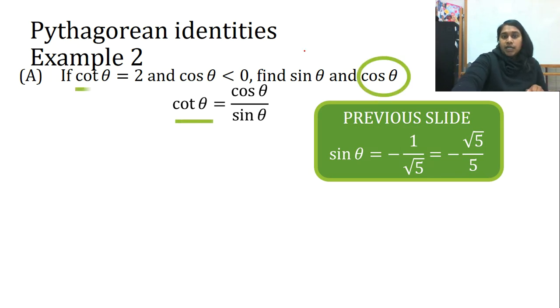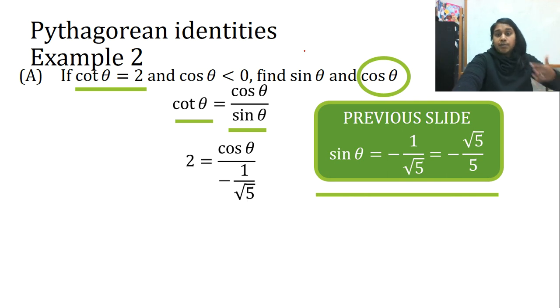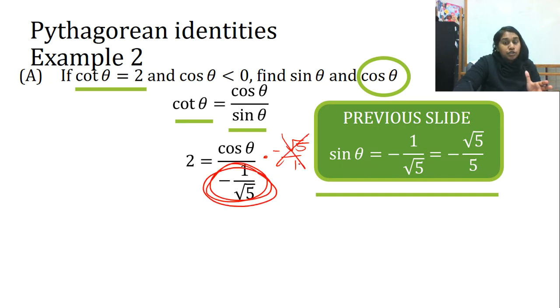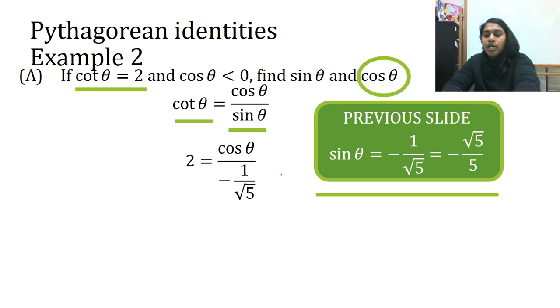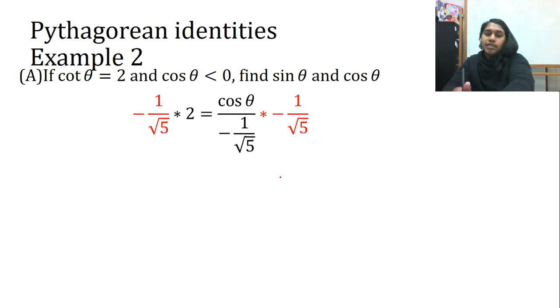I know cotangent and I know sine. So, I can plug those in. So, I plug in 2 and I plug in negative 1 over the square root of 5. And now I solve for cosine. It's just that simple. Here a common mistake might occur. Kids might multiply by the reciprocal, thinking that they're getting rid of something. Well, I like your thought process. However, you're getting rid of the entire denominator. So, make sure you're multiplying by the entire denominator. So, I multiply by the entire denominator. I can now get rid of it on the right-hand side. On the left, I just multiply across.